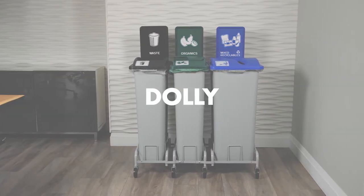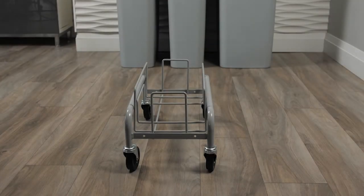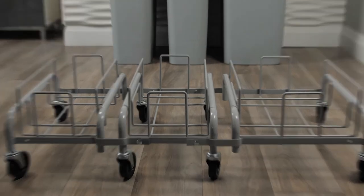To make your Waste Watcher station portable, consider adding a dolly. You will receive a single dolly that will serve as the base in the middle, as well as an expansion for each stream.